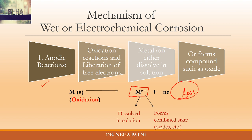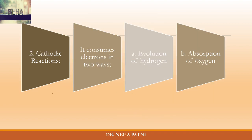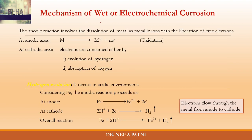The metal cation has two options: either it gets dissolved in the solution, or it forms a combined-state compound such as an oxide. At the cathode, reduction occurs — the gain of electrons takes place in one of two ways: either evolution of hydrogen gas or absorption of oxygen.